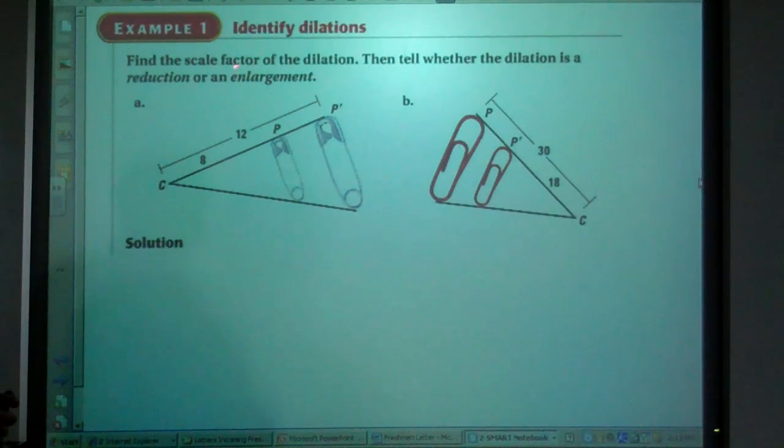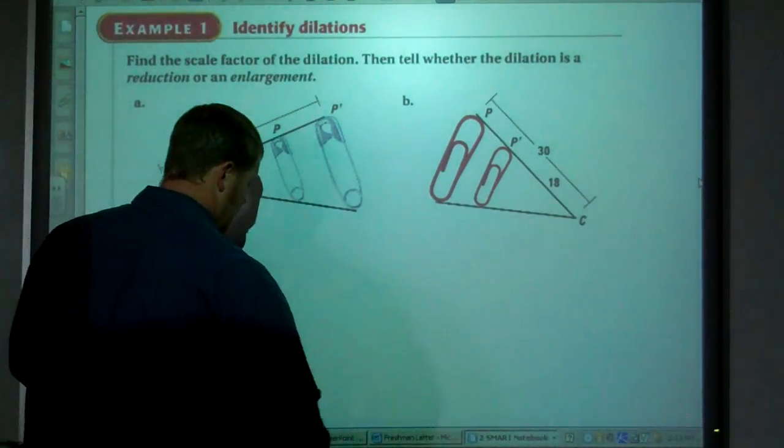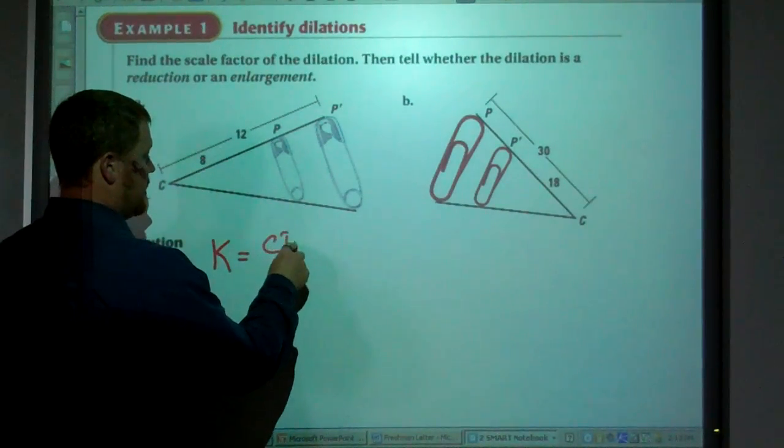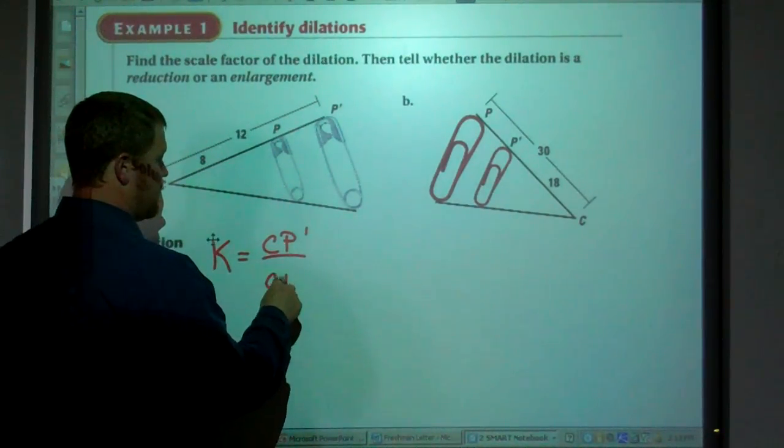Find the scale factor of the dilation, then tell whether the dilation is a reduction or an enlargement. So K equals C to P prime divided by CP.